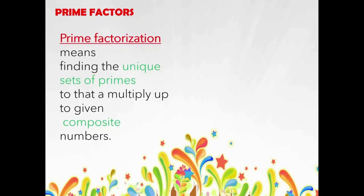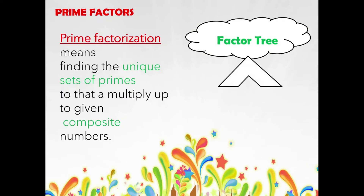Now let us find the prime factors. Prime factorization means finding the unique sets of primes that multiply up to a given composite number. Once we find the prime factors of a number, all those factors must be prime numbers — that is why it is called prime factorization. We are going to use a factor tree to find the prime factors of a number.